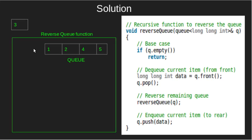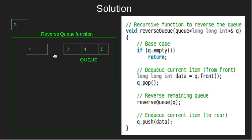Thus, in the reverse function, we check if the queue is empty or not. Here, the queue is not empty. Thus, we'll store the front element in data and dequeue the queue, i.e. pop 1. Now, we'll call the reverse queue function for the remaining queue.